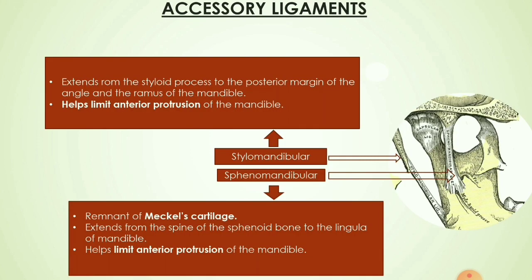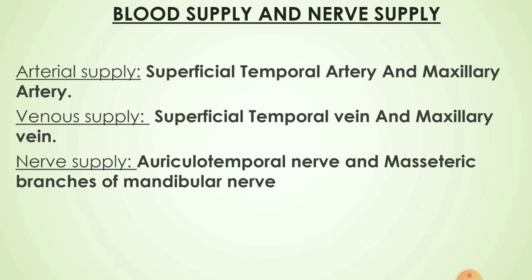The two accessory ligaments are the stylomandibular ligament and the sphenomandibular ligament. The stylomandibular ligament extends from the styloid process to the posterior margin of the angle and ramus of the mandible. The sphenomandibular ligament is the remnant of Meckel's cartilage, extending from the spine of the sphenoid bone to the lingula of the mandible. Both help in limiting anterior protrusion of the mandible. Arterial supply is via the superficial temporal artery and maxillary artery branches; venous supply via the superficial temporal vein and maxillary vein. Nerve supply is via the auriculotemporal nerve and masseteric branches of the mandibular nerve.